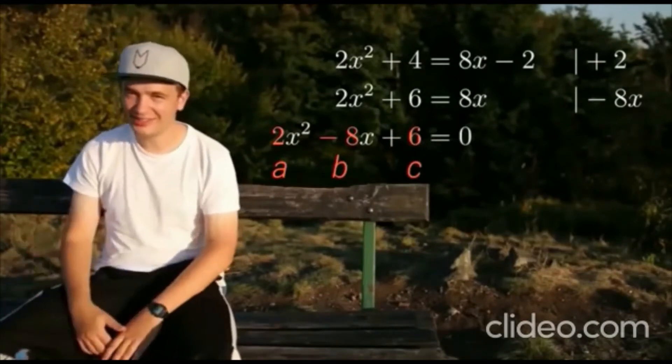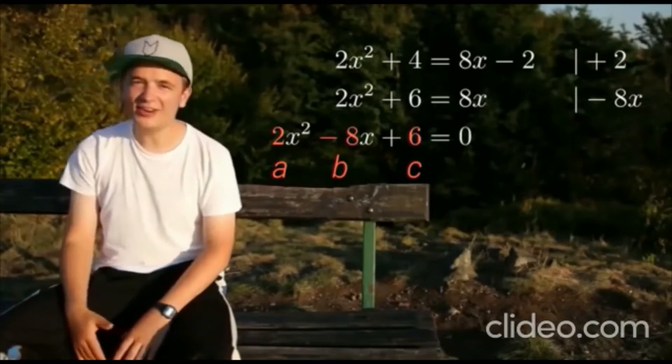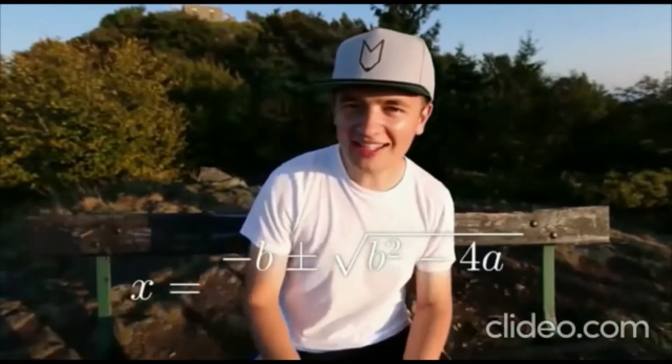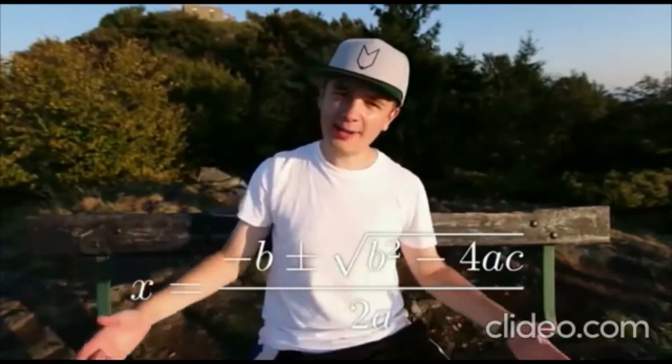You will see that you get the solution in the very next step. Just sing the song in your head: negative b plus or minus the square root of b squared minus 4ac over 2a.